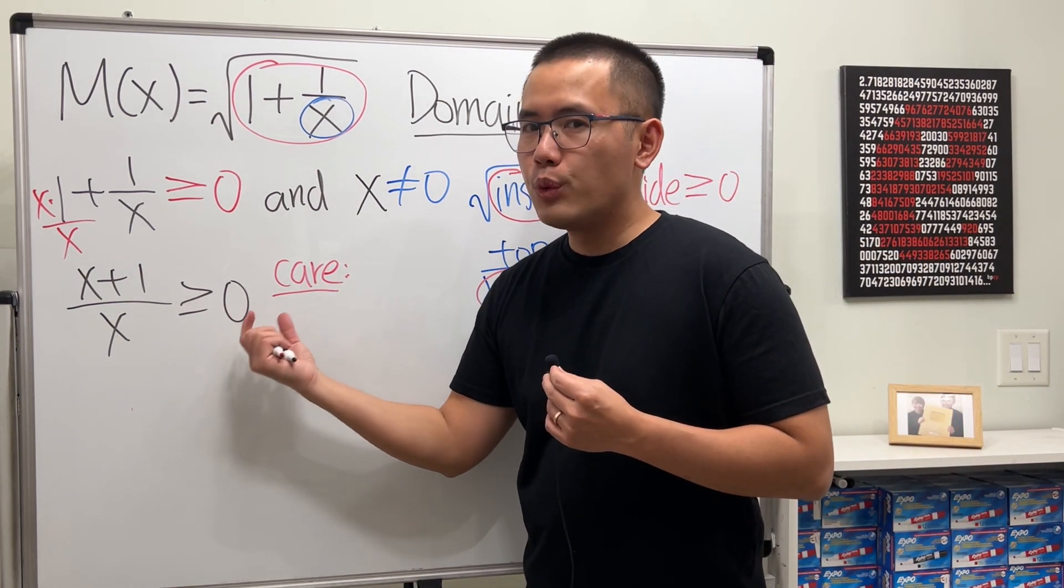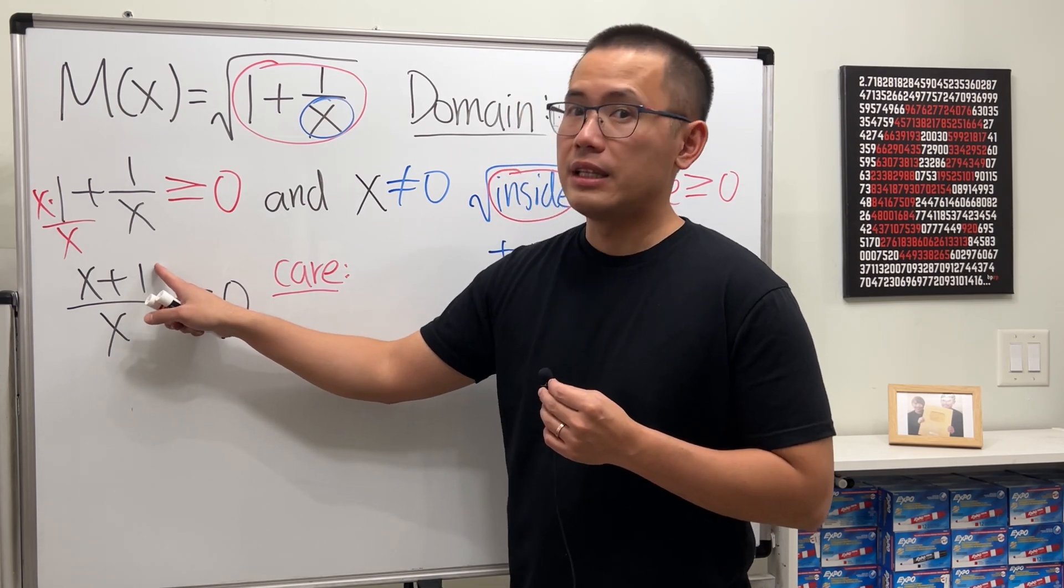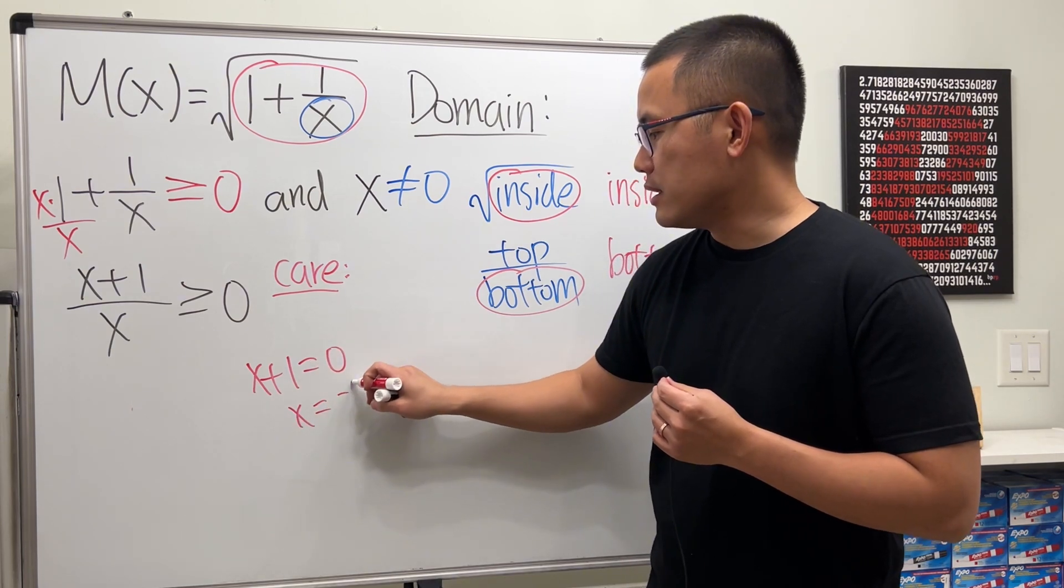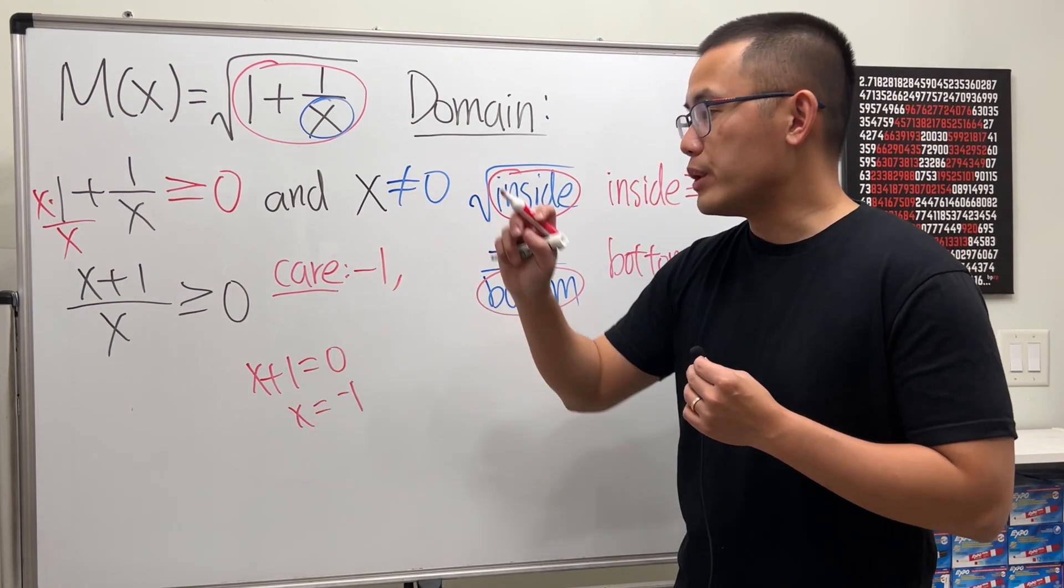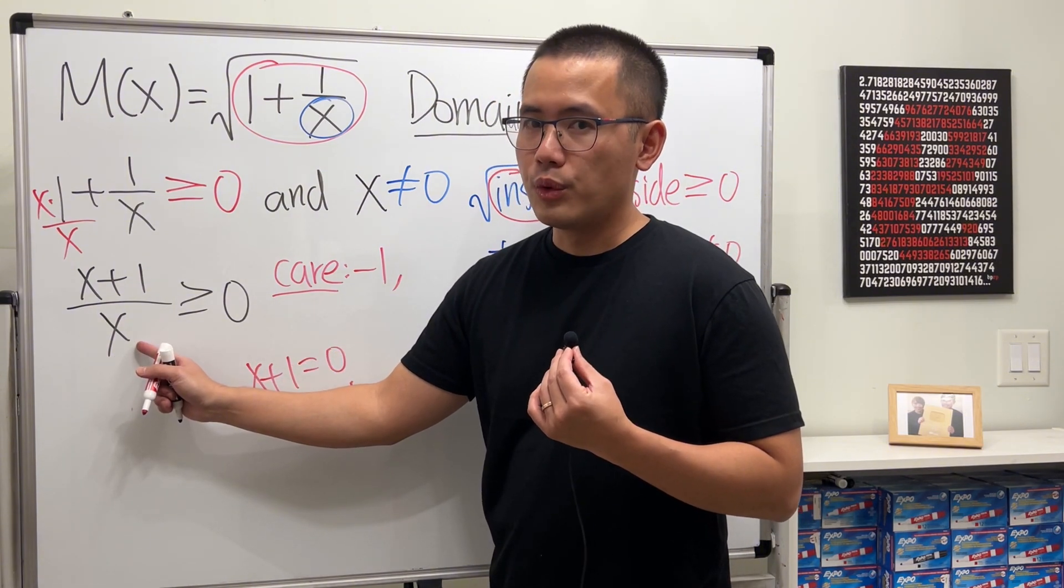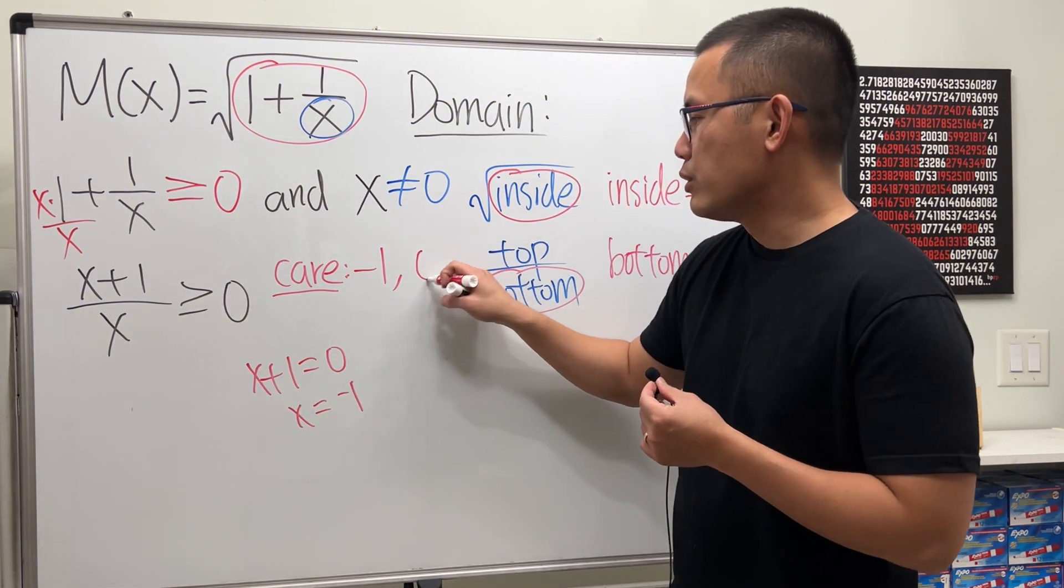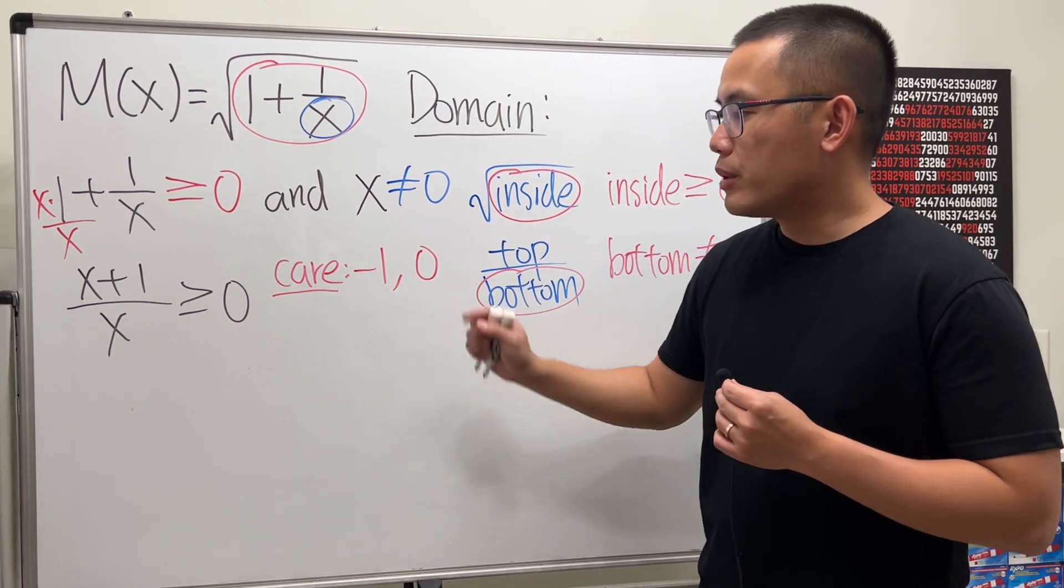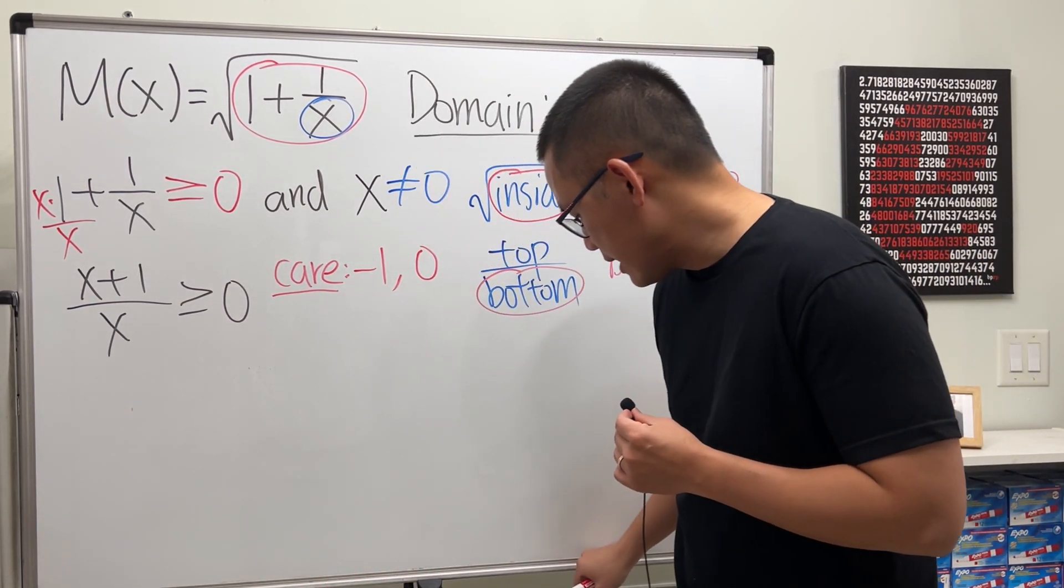What do I mean by that? Whenever we have one side equal to 0, let's see how we can make the top equal to 0. If you want to make the top equal to 0, well, x has to be negative 1. So that's a number that we care. And also, we look at the bottom and see how we can make it equal to 0. Well, x equal to 0 there. Therefore, we care about these two numbers. And let's just go ahead and do the number line test.